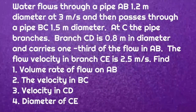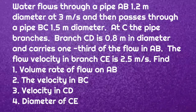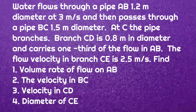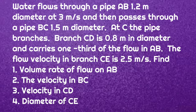So first I will read what is the given problem. Water flows through a pipe AB of 1.2 meter diameter at 3 meter per second, and then passes through a pipe BC of 1.5 meter diameter. At C the pipe branches. Branch CD is 0.8 meter in diameter and carries one third of the flow in AB. The flow velocity in branch CE is 2.5 meter per second.